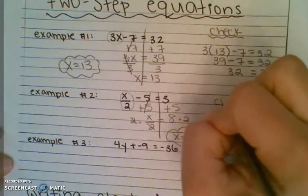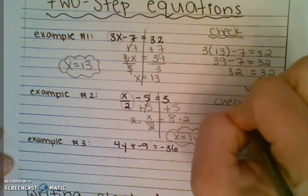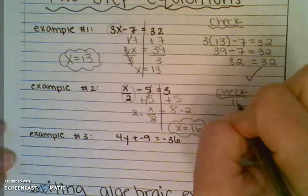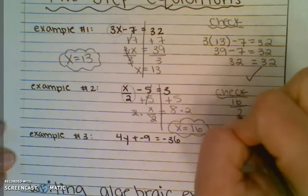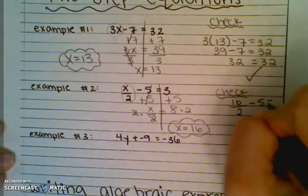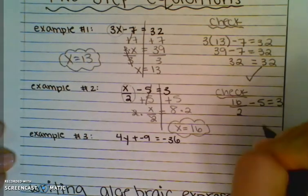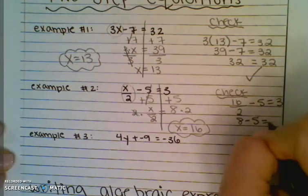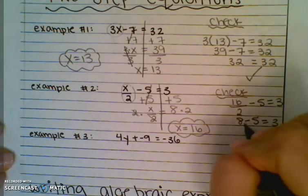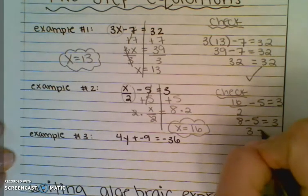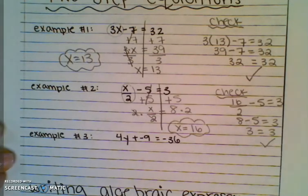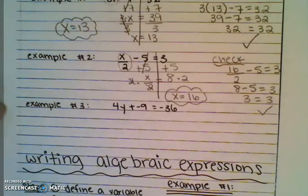If you were going to do a check — it'd be 16, because that was our x, divided by 2, so minus 5 has to equal 3. 16 divided by 2 is 8, minus 5 has to equal 3. 8 minus 5 is, in fact, 3. Does 3 equal 3? Yes, it does. So that's if you were doing a check.